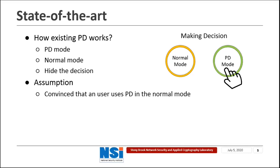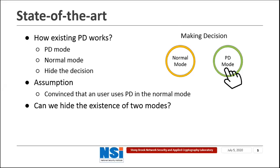All current PD schemes work under an assumption that it should be convincing that users can use a PD scheme in the normal mode. However, this assumption is sometimes not convincing, as a PD scheme is designed for a user to hide the existence of some hidden data. So when an adversary observes that a user is using a PD scheme, the adversary will believe with high probability that the user is using the scheme in PD mode and some sensitive data is hidden.